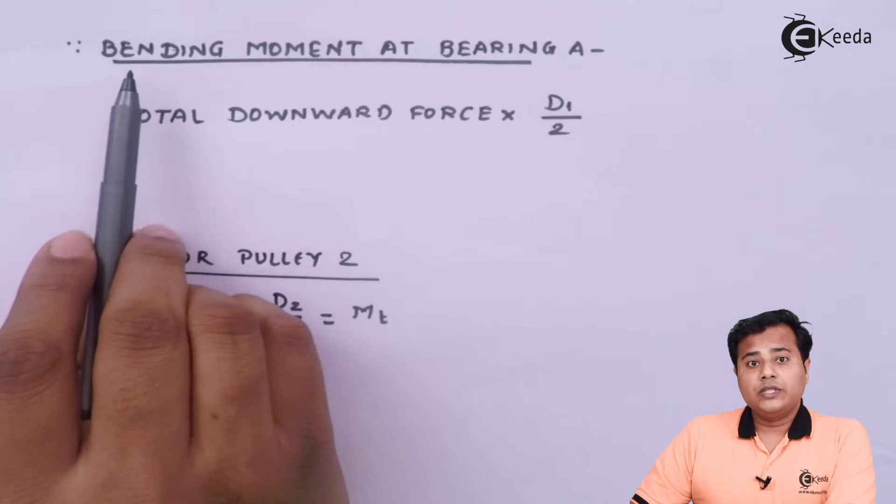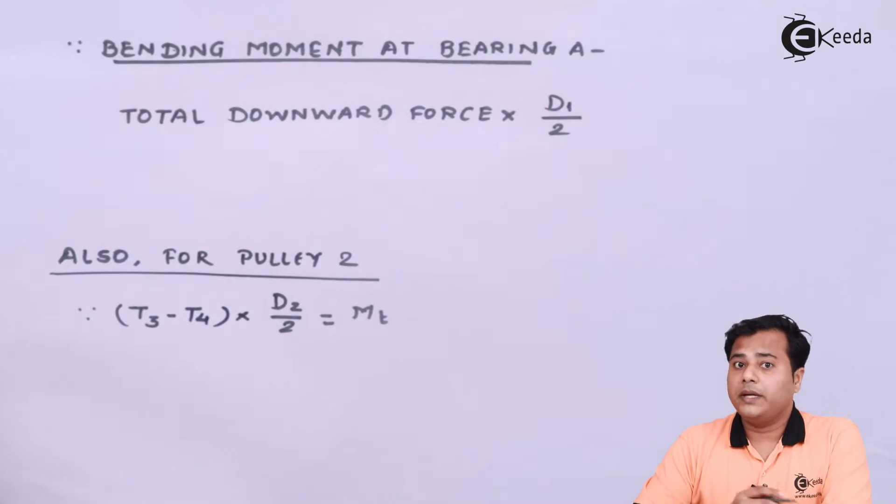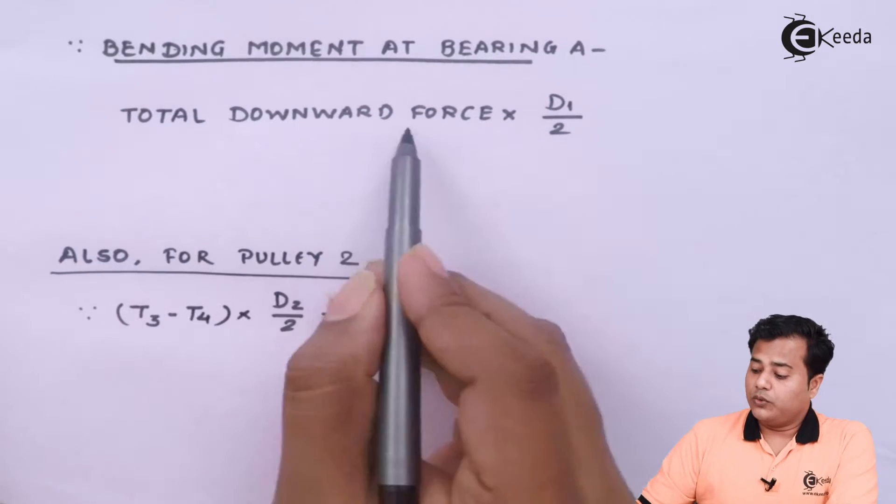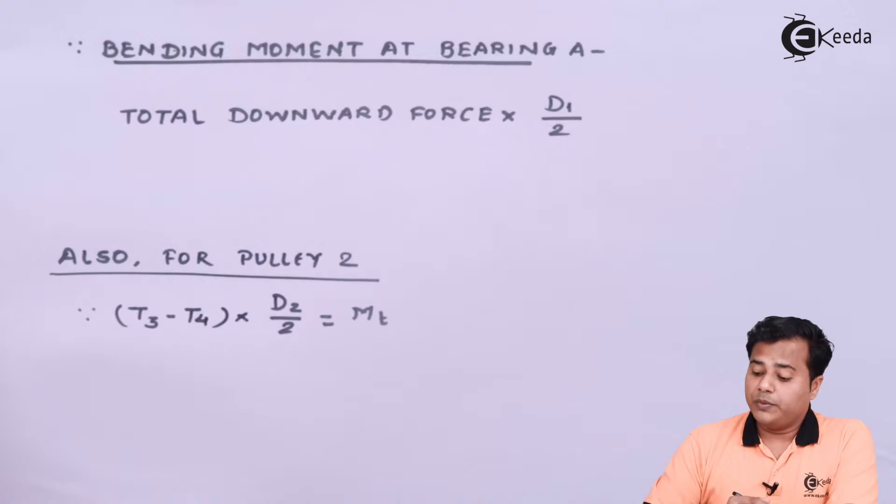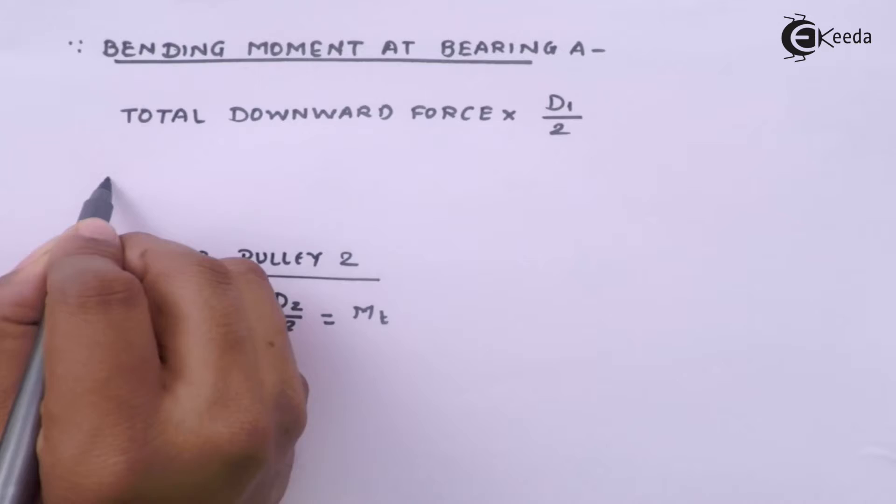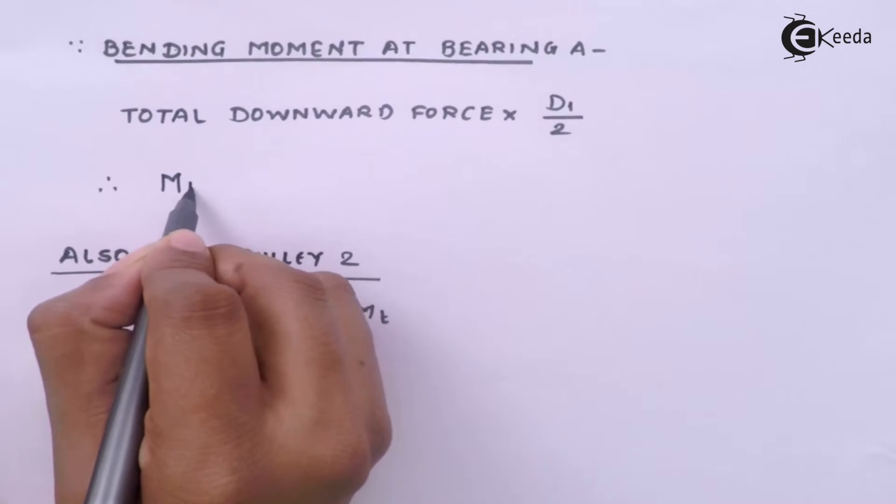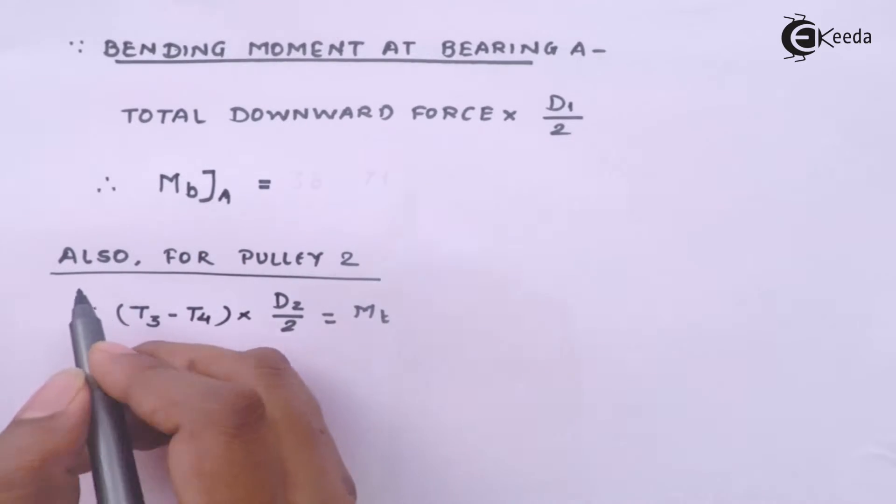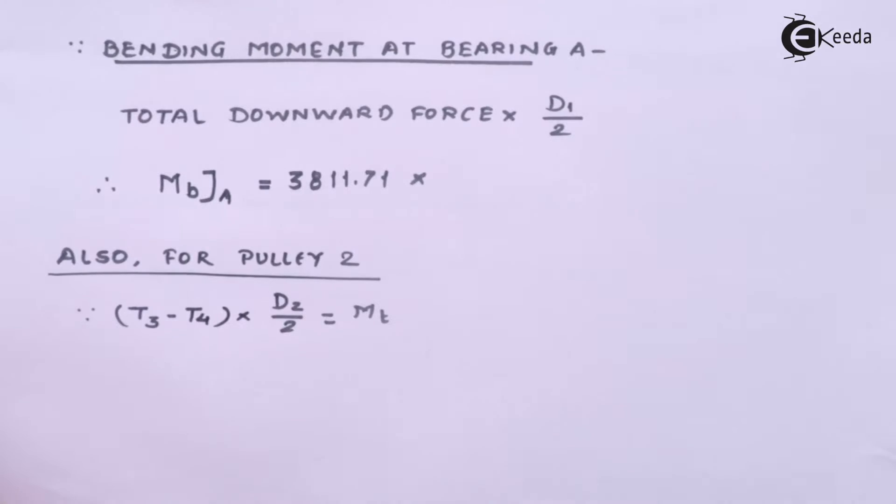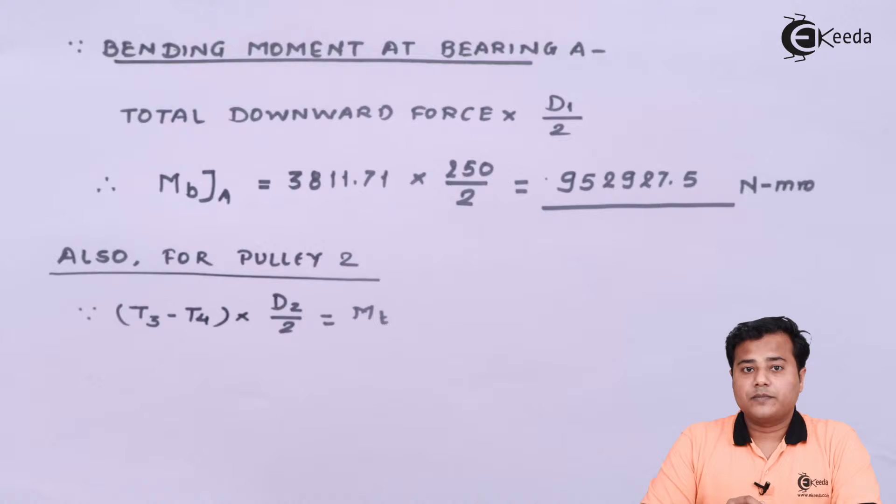Using the force acting at pulley number 1, we can find out the bending moment at bearing number 1 or bearing A. The total downward force times the given radius will give the bending moment. Therefore, bending moment at point A equals the force times 250 divided by 2, in newton-millimeters. We need to design for this particular bending moment.